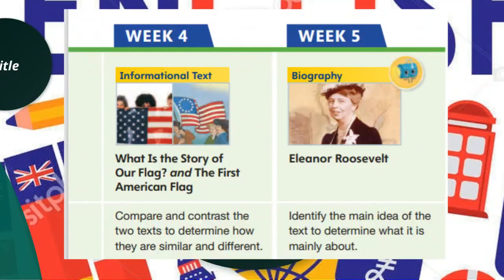In week four it's an informational text — we will learn about 'The Story of the Flag' and 'The First American Flag,' comparing and contrasting the two texts to determine how they are similar and different. In week five we will learn about the life of Eleanor Roosevelt, and we will identify the main idea of the text and determine what it is mainly about.